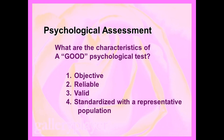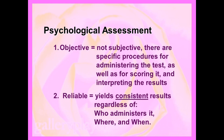That was an example of a bad psychological test. Let's talk about the characteristics of good psychological tests. According to many psychologists, a good psychological test is objective, reliable, valid, and standardized with a representative population. A good test being objective means there are specific procedures for administering the test, scoring the test, and interpreting the results.